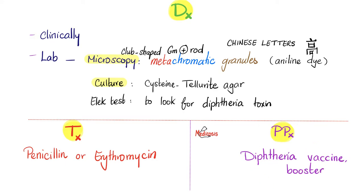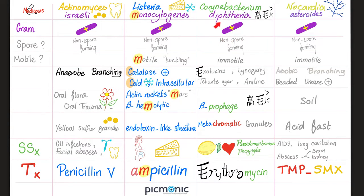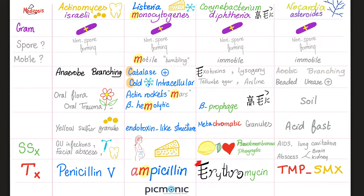Just look at diphtheria statistics between the 1920s and today in countries with high vaccination rates. To summarize: Corynebacterium diphtheriae is a gram-positive, non-spore-forming, immotile rod arranged in Chinese letters. It secretes an exotoxin; the tox gene was introduced via lysogeny by a beta-prophage. It grows on tellurite agar; use aniline dye to see the metachromatic granules. Signs and symptoms include pseudomembranous pharyngitis with lymphadenopathy, myocarditis, and neuropathy. Treatment is erythromycin.